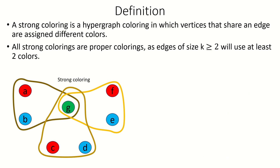This is true in general because if a coloring is strong, then an edge of size k will use k colors, meaning every edge of size greater than 1 will not be monochromatic.